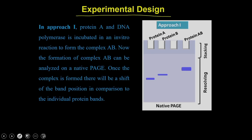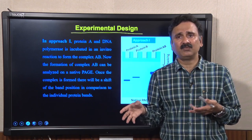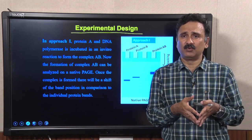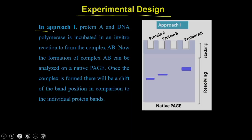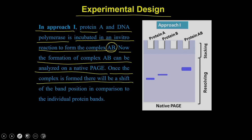The experimental design can be of 2 different types depending on the type of infrastructure and resources you have in your laboratory. In approach 1, what you can do is take protein A and DNA polymerase, clone them separately, and then incubate them in an in vitro reaction to form the complex A-DNA polymerase. The formation of the complex A-B can be analyzed on a native PAGE. Once the complex is formed, there will be a shift of the band position in comparison to the individual protein bands.